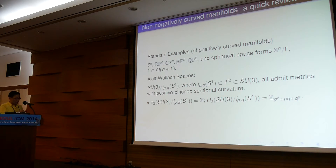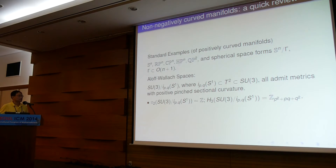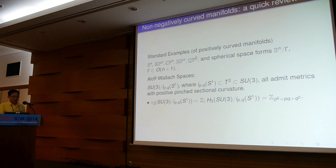Let me give one non-standard family of examples: the so-called Aloff-Wallach spaces. You consider the rank-2 Lie group SU(3) and quotient by a family of circles inside the maximal torus of SU(3). For co-prime pairs of integers (p,q), you get these seven-dimensional homogeneous spaces. All of them admit a positively pinched sectional curvature metric. From topology, these seven-dimensional manifolds are all simply connected, with second homotopy group equal to ℤ, and third homotopy group being a torsion group of order given by a specific formula. So this gives many examples of seven-dimensional manifolds with positive, even pinched, sectional curvature.